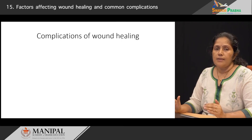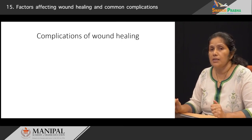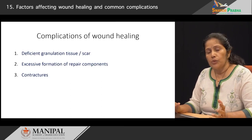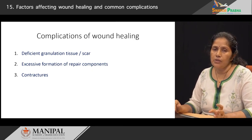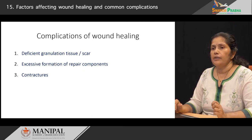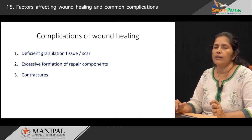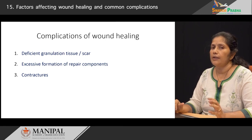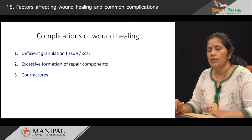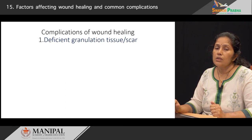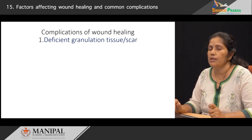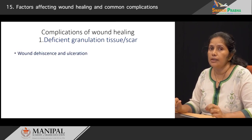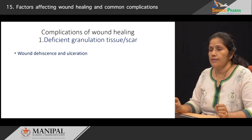In spite of the best attempts, sometimes there are complications in wound healing, and one must have the ability to recognize these at the earliest. These fall into three important categories. The first category is when there is deficient granulation tissue or deficient scar tissue formation. The second category arises when there is excessive formation of the repair components — the components which take part in formation of granulation tissue. The third is when patients develop contractures. If a patient does not have adequate granulation or scar formation, it can result in wound dehiscence or ulceration.